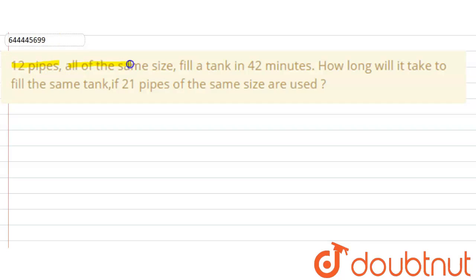all of the same size fill a tank in 42 minutes. So how long will it take to fill the same tank if 21 pipes of the same size are used? So there are 12 pipes of all the same size, fill a tank in 42 minutes. That's a given, so first write down the given part.